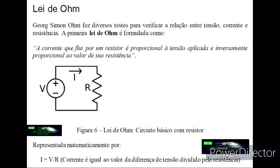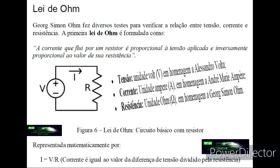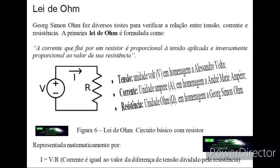A resistência de uma seção do material é dada por R é igual a PL dividido por A, onde P é a resistividade do material, L é o comprimento e A é a área da seção transversal. Isto pode ser estendido a uma integral para áreas mais complexas, mas essa fórmula simples é aplicável a fios cilíndricos e à maioria dos condutores comuns.